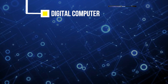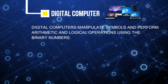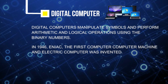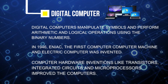Digital computers are the improved version of the analog computers created during the analog technology period. Unlike analog computers that manipulate electronic signals, digital computers manipulate symbols. Digital computers perform arithmetic and logical operations with the use of binary numbers. The Electronic Numerical Integrator and Computer, or ENIAC, was created in 1946. It is the first electronic computer that uses vacuum tubes as active logic elements, which increased its operating speed. Further improvements to computer hardware included the creation of transistors, integrated circuits, and microprocessors that led to the current computers we use today.